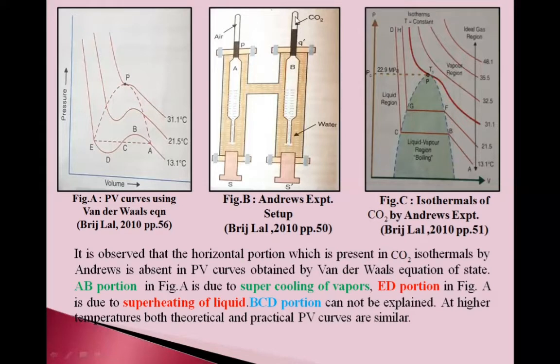From the length of this tube, which is calibrated, we can find volume of CO2 gas. In this way, pressure and volume for CO2 gas are calculated. Using these pressure and volume values, we can draw PV curves here. These are PV curves by Andrews' experiment for CO2 gas.